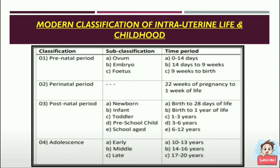The postnatal period includes: newborn from birth to 28 days; infant from birth to 1 year; toddler from 1 to 3 years; preschool child from 3 to 6 years; school-age child from 6 to 12 years. Adolescence is divided into early adolescence from 10 to 13 years, middle adolescence from 14 to 16 years, and late adolescence from 17 to 20 years.